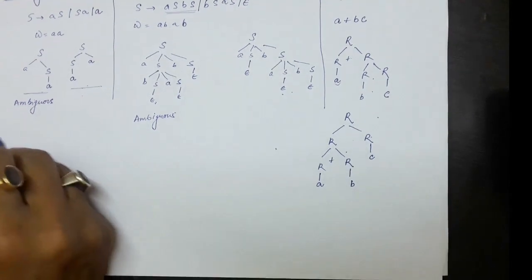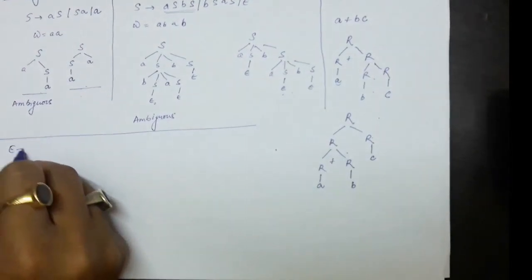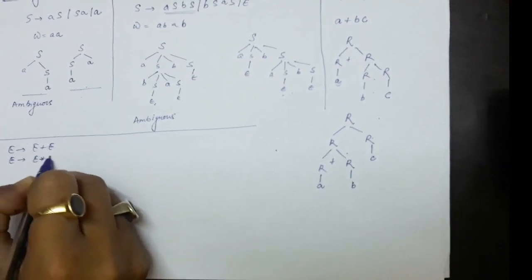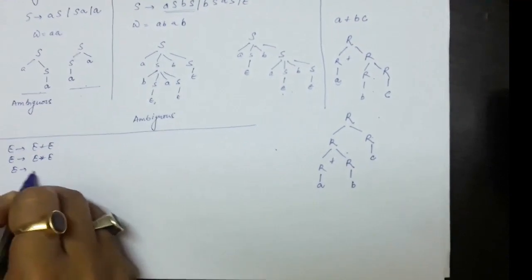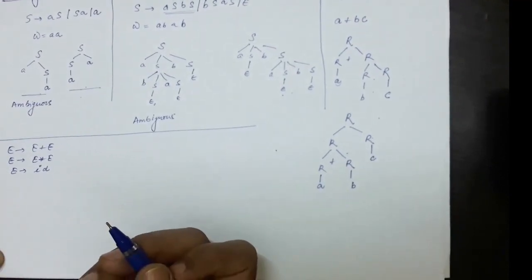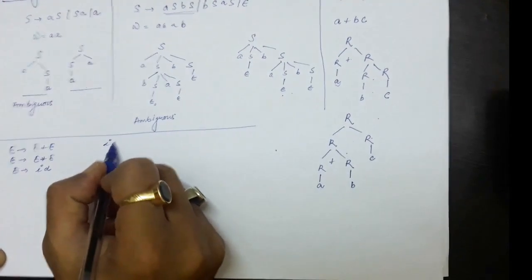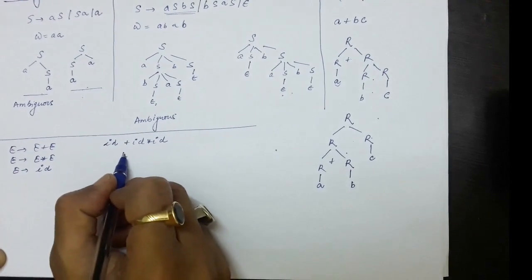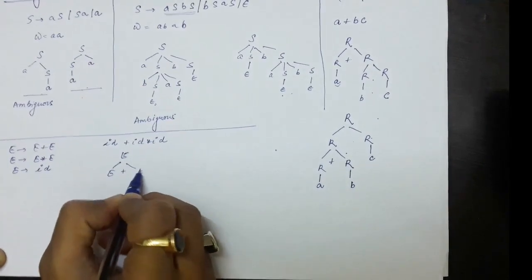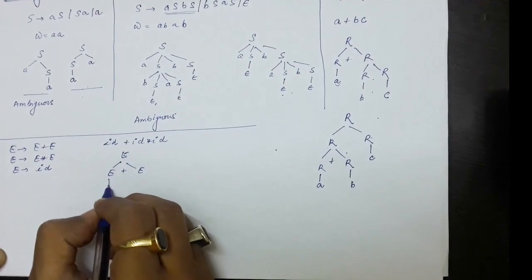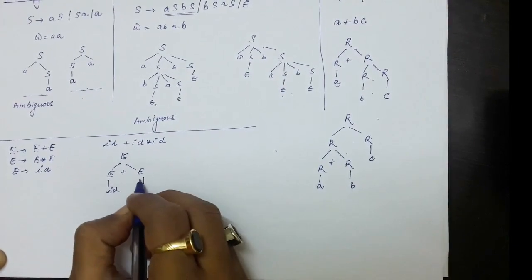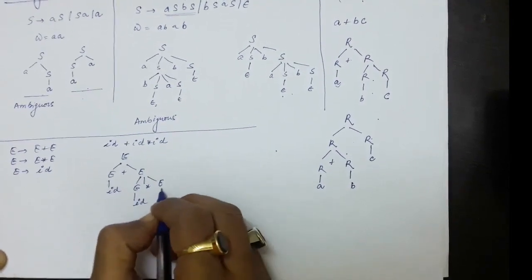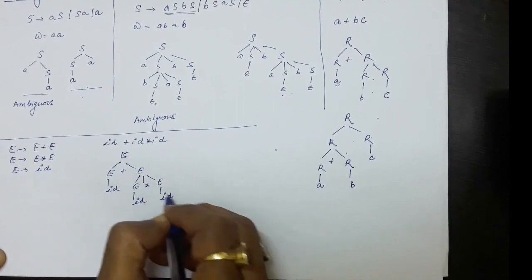For example, if we have the grammar E produces E plus E, E produces E multiplied with E, and E produces id — this is an ambiguous grammar. You can see with the example id plus id multiplied with id: using E produces E plus E, we get id on the left, then E multiplied with E on the right, where each E produces id. So id plus id multiplied with id has multiple derivation trees.